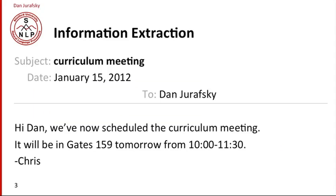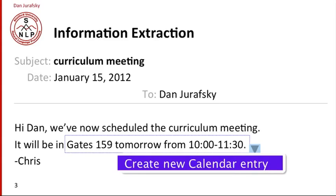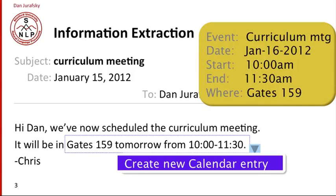Another important task is information extraction. For example, imagine that I have the following email from my colleague Chris about scheduling a meeting. We'd like software to automatically notice that there are dates like tomorrow, times like 10 to 11:30, and a room like Gates 159. Extract that information, create a new calendar entry, and then populate a calendar with this kind of structured information — the event, date, start and end — for a calendar program. And modern email and calendar programs are capable of doing this from text.